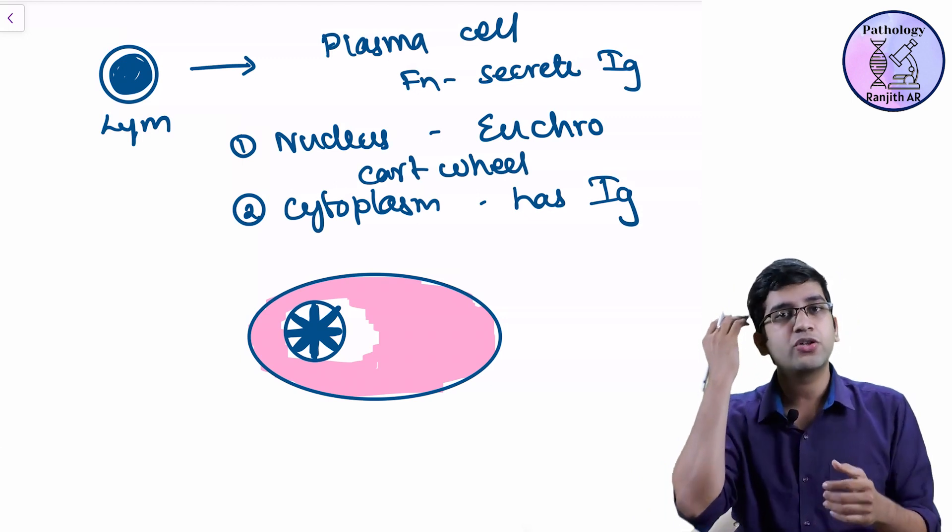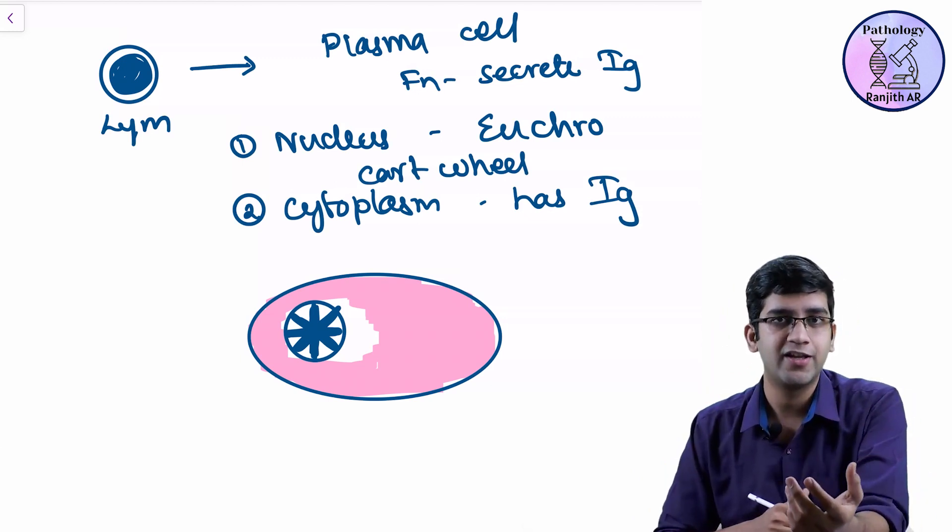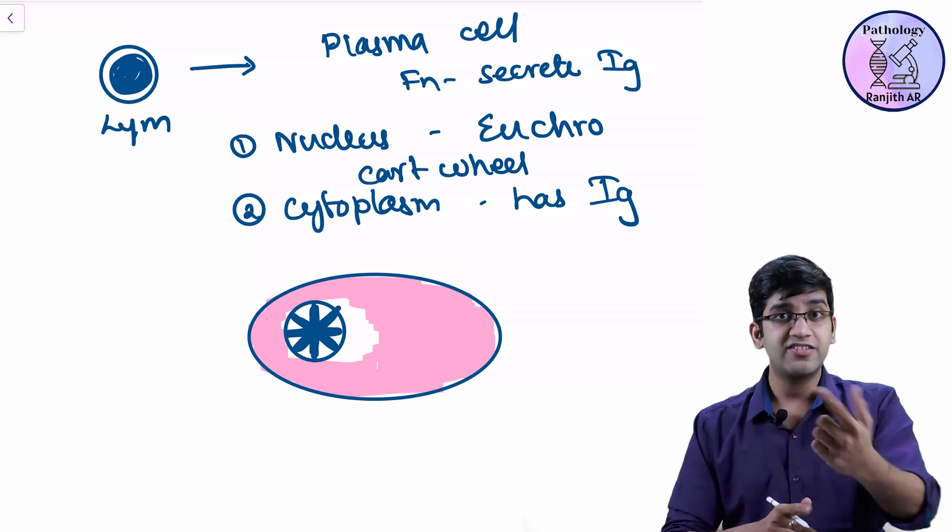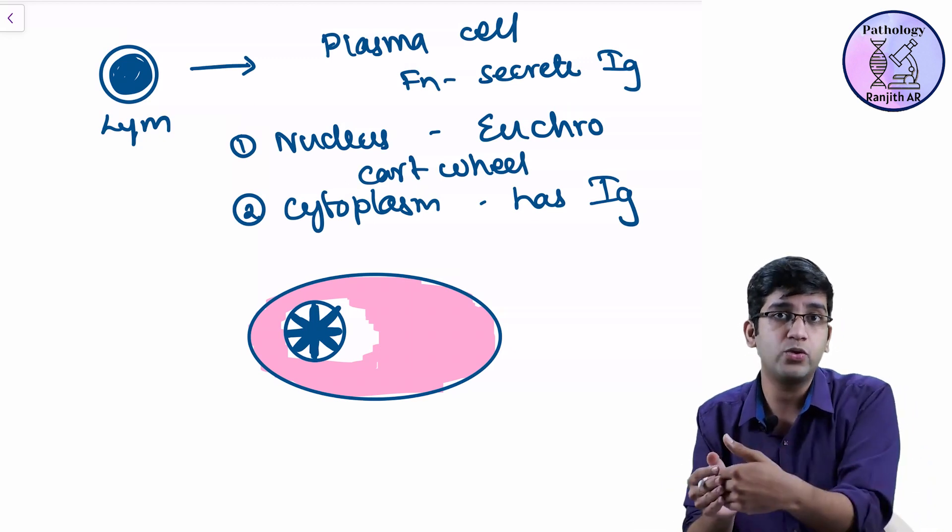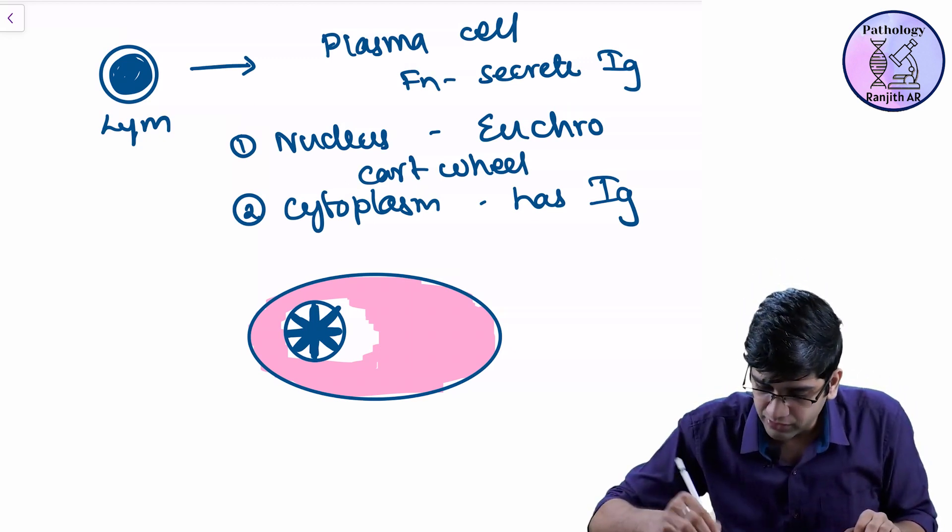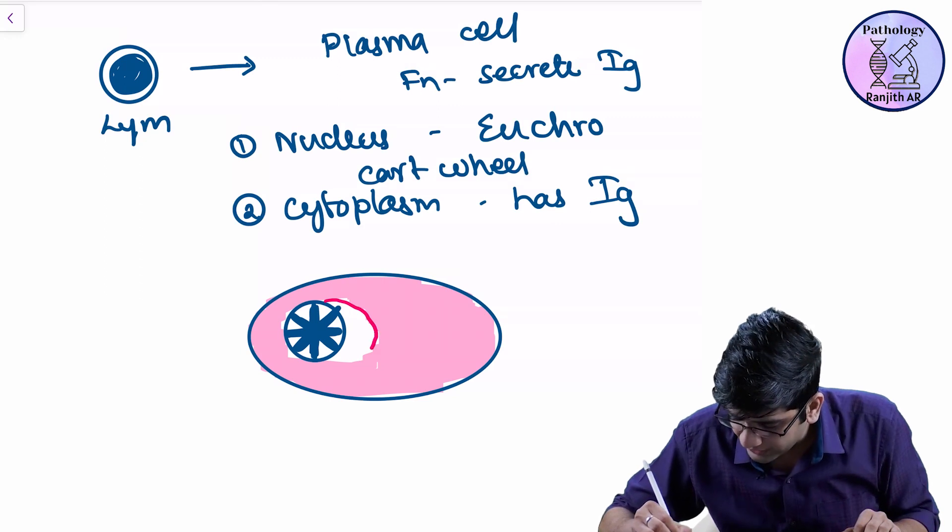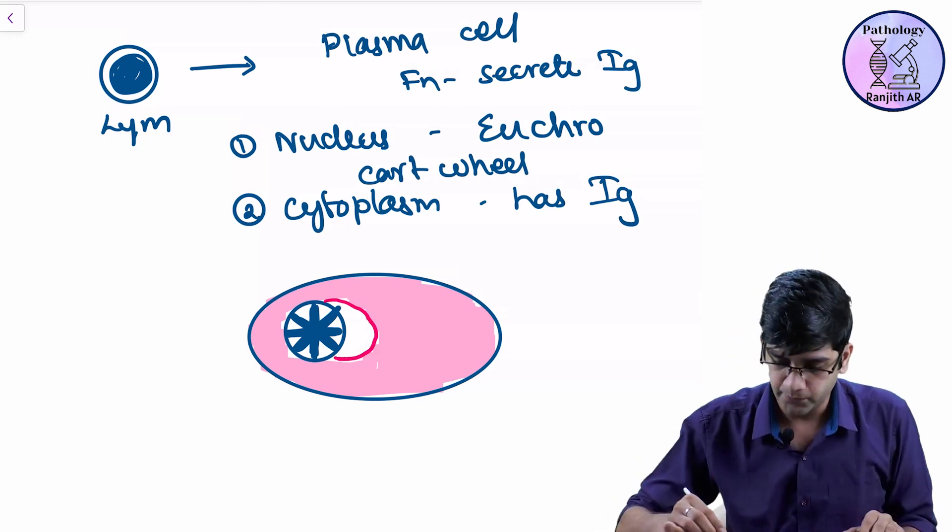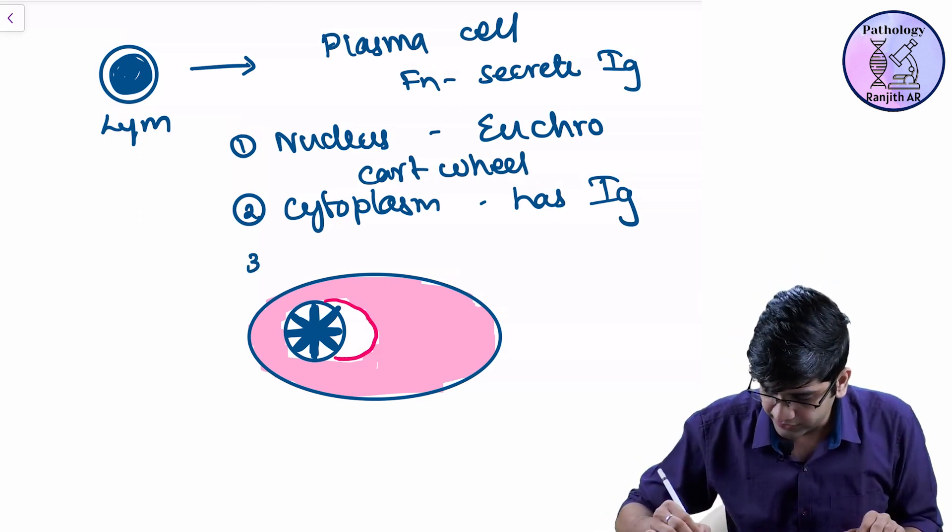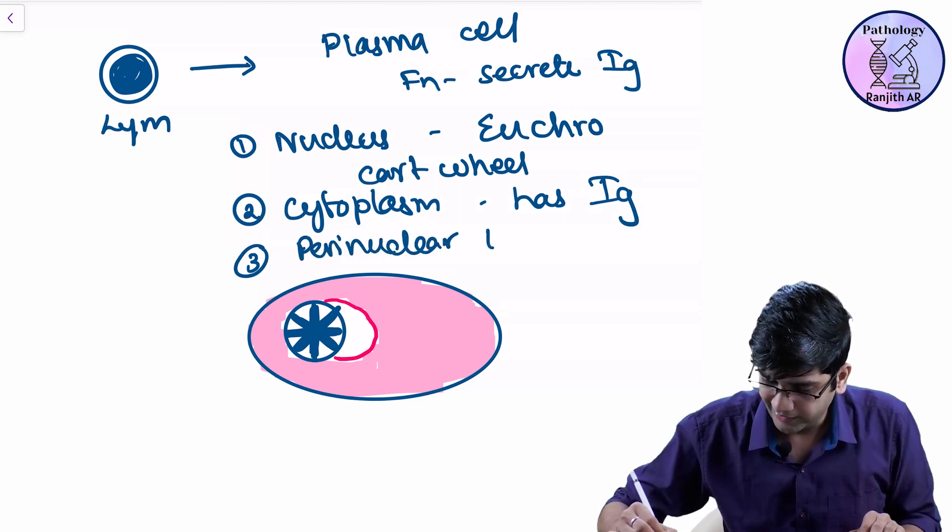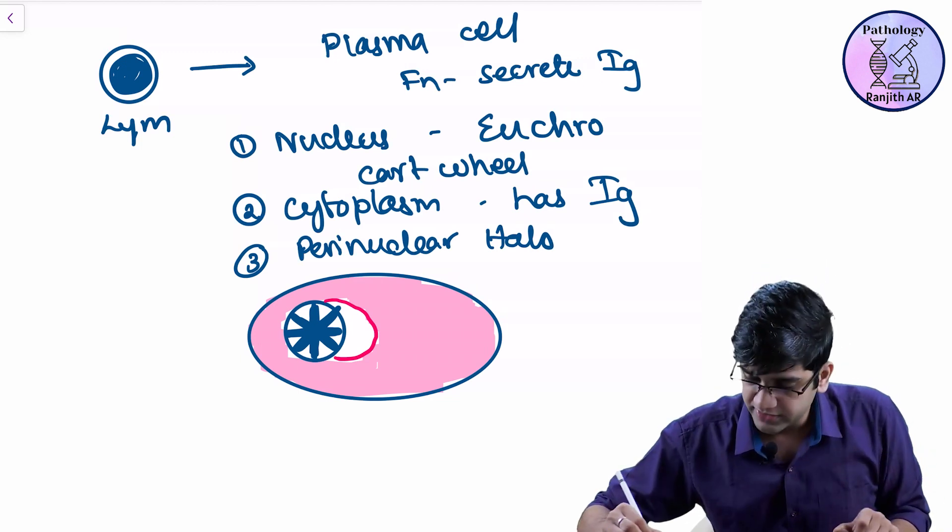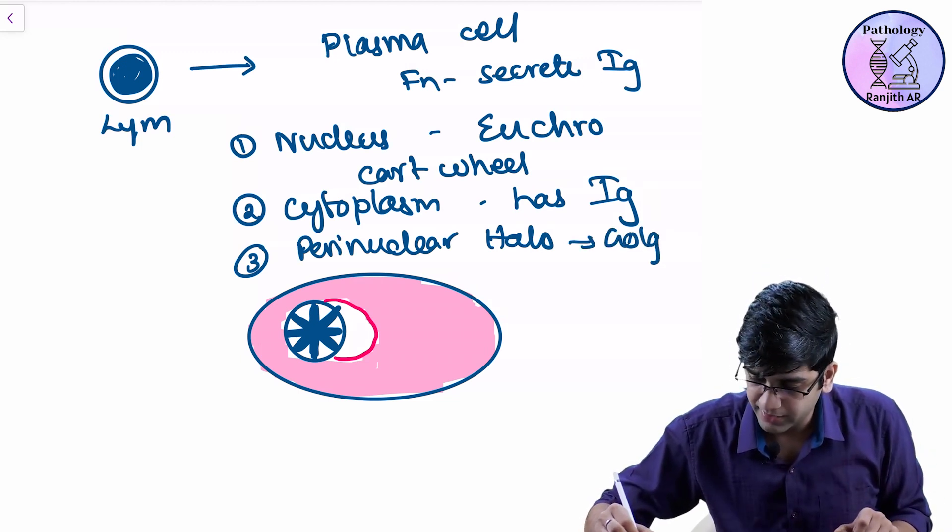I said that the function of this protein is going to go outside. So it has to be secreted. The signal comes from my Golgi which does the post-translational modifications. So close to my nucleus, I have Golgi which will have a perfect perinuclear halo, perinuclear hof. The third important thing is I'll have a perinuclear halo or a perinuclear hof. There's nothing but because of Golgi apparatus.